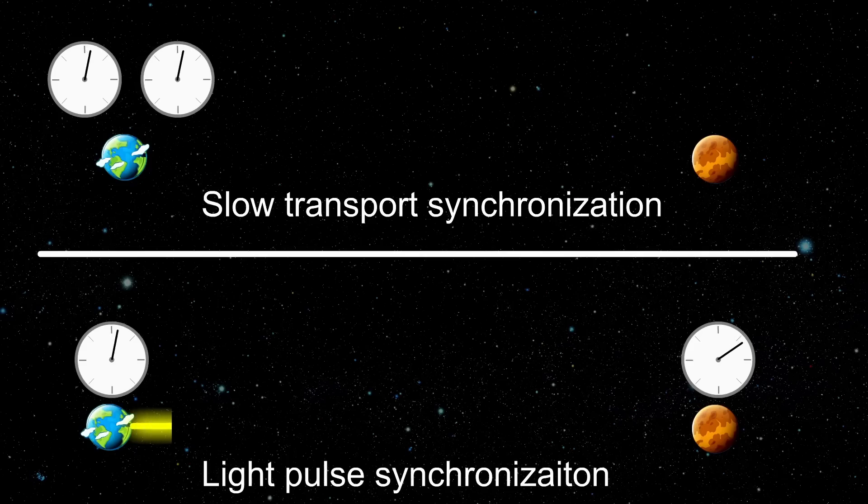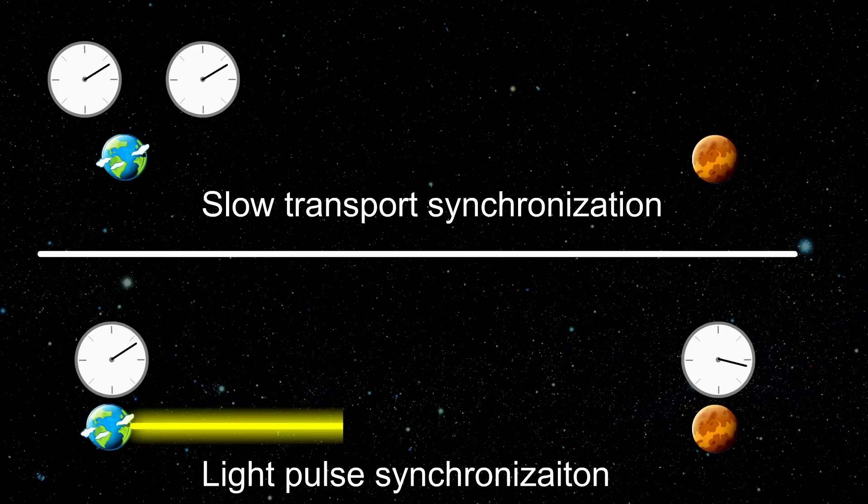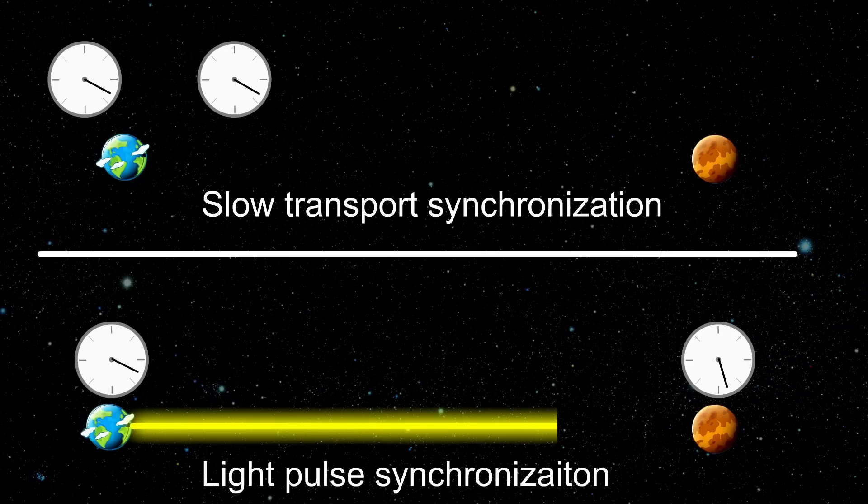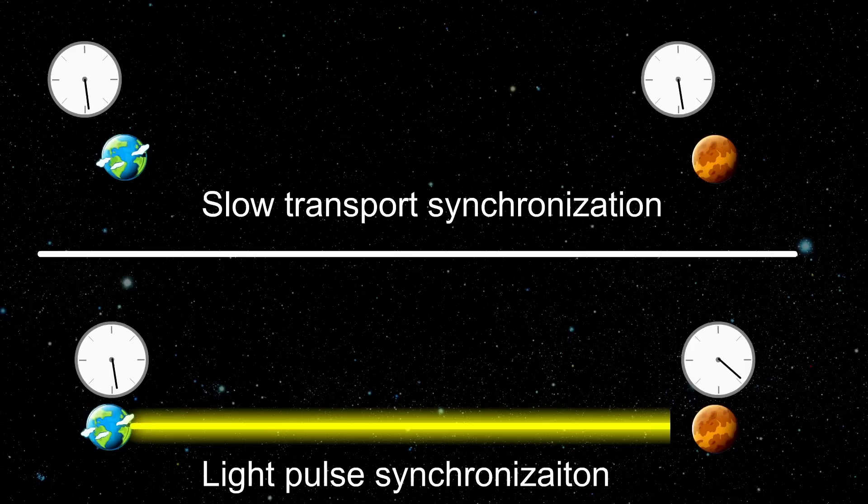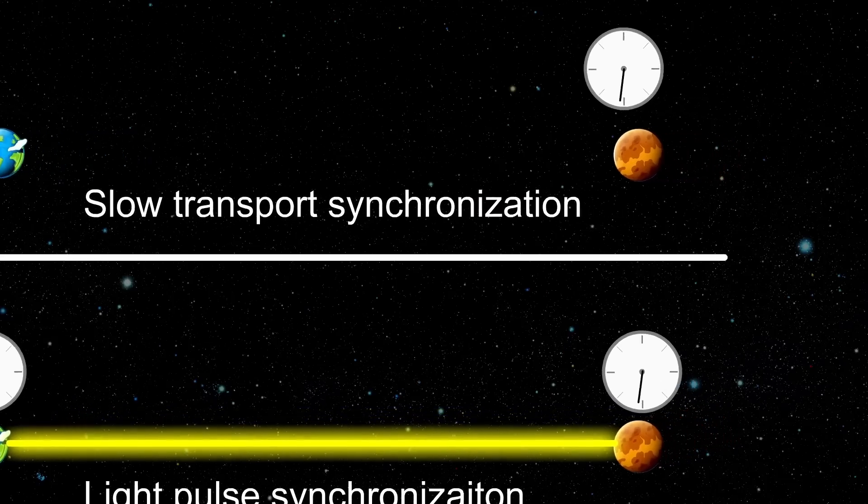And now you can make a test. Is there a difference between clocks synchronized by a light pulse and a slow-transported clock? Such experiments were indeed done and they showed that these two methods of synchronization are equivalent. This means that if you do the light pulse or slow transport, you get two identical clocks on Mars.